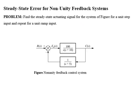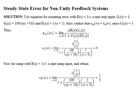In the given example, we have to find the steady state actuating error for the system given in the figure, where the input is a step, and we have to repeat for ramp input. For this we will find steady state actuating error for a closed loop control system. In this example, G1(s) = 1, G2(s) = 100 / [s(s+10)], and H1(s) = 1 / (s+5).